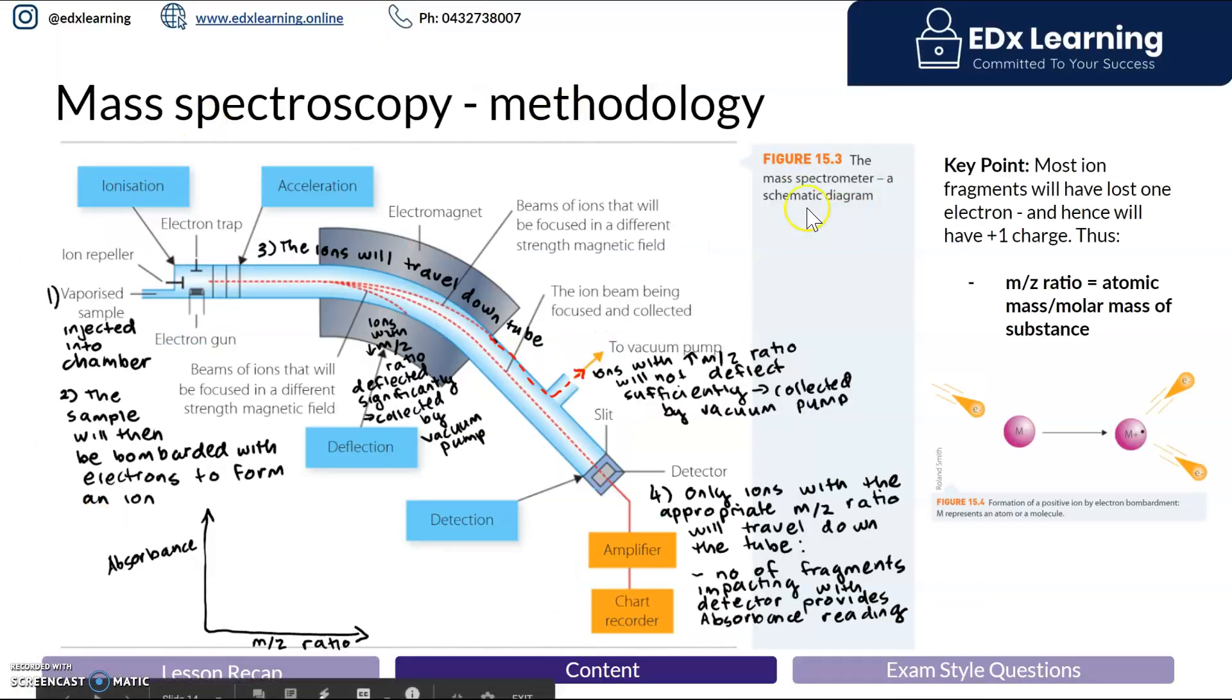This is a full annotated diagram. It's important to note that we have relative abundance on our y-axis and mass-to-charge ratio on our x-axis. Since the charge of most fragments is plus one, the mass-to-charge ratio tends to simply be the mass of the fragment in atomic mass units.